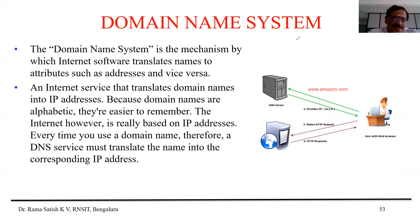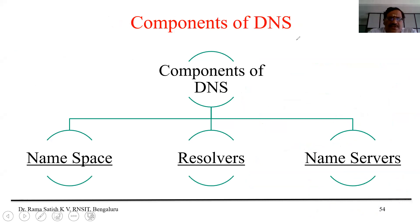Using that IP address, your computer will send a request to the Amazon server and Amazon server will respond back. This is how exactly DNS plays a very important role. IP addresses are very much important in order to identify and also send and receive the request and response. Moving further, what are the components of DNS?